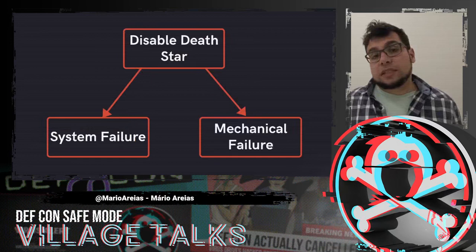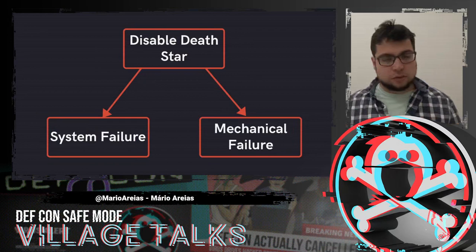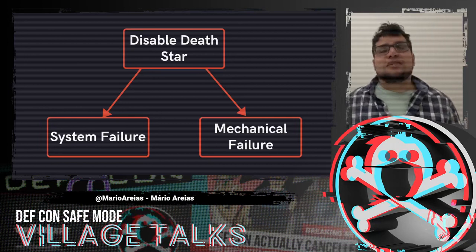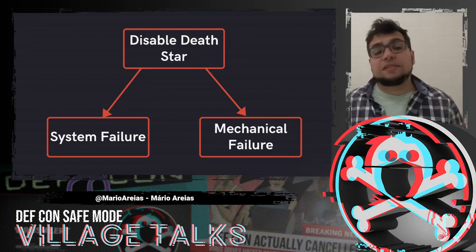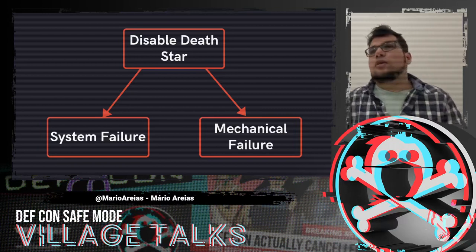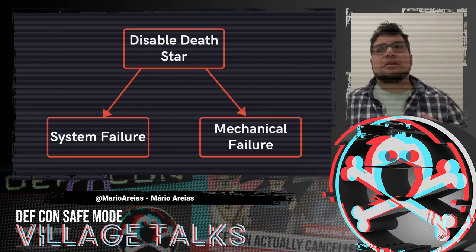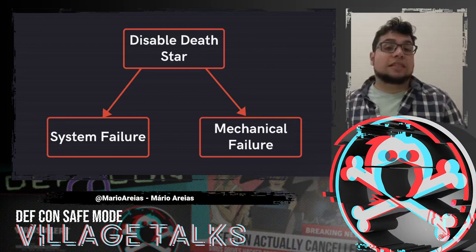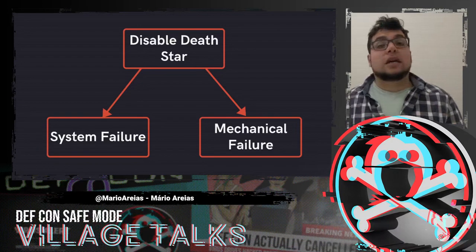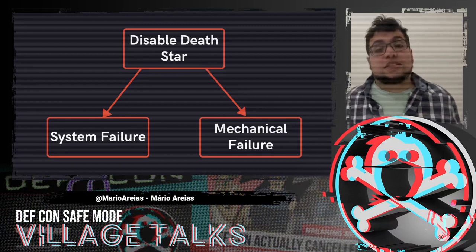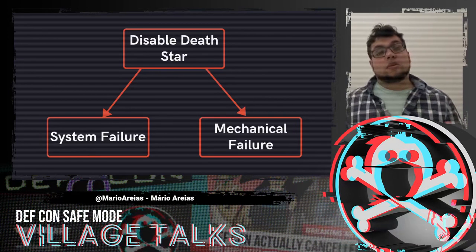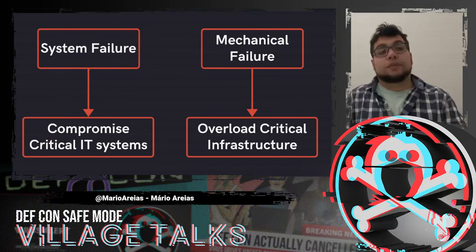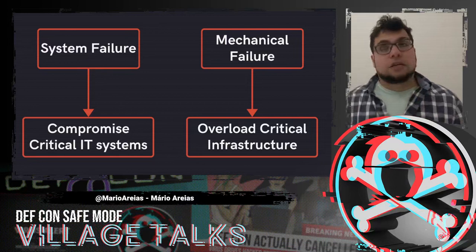To disable the Death Star, there are two ways: system failure or mechanical failure. A system failure would involve disabling critical systems — navigation, heating, engines — causing a chain reaction that shuts down the Death Star. A mechanical failure would cause hardware problems that trigger another kind of chain reaction and cause the whole thing to shut down. To accomplish system failure, an attacker needs to compromise a critical IT system. For mechanical failure, they need to overload the critical infrastructure. In both cases, the attacker needs access to the internal network — there's no other way.